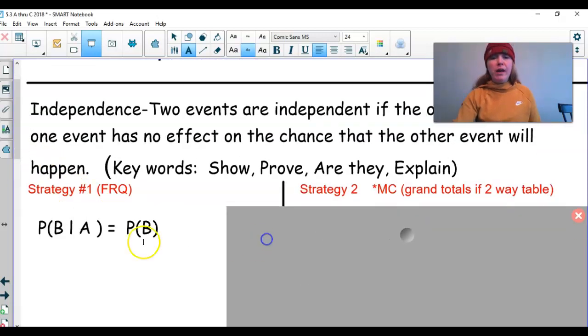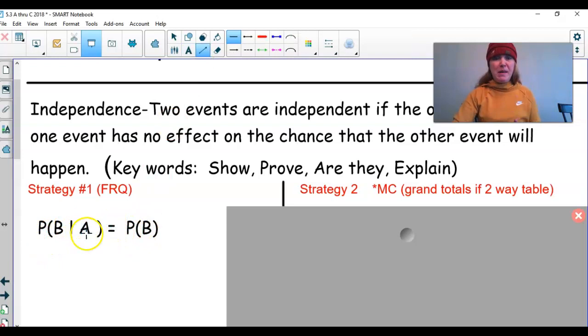Here's what strategy one is. So when you are proving independence, it's like finding two different problems. What you're going to do is you're going to figure out the probability of B given A based off the data that they give you. That's going to be your first problem. Then you're going to figure out based off the data that they give you, what's the probability of B?